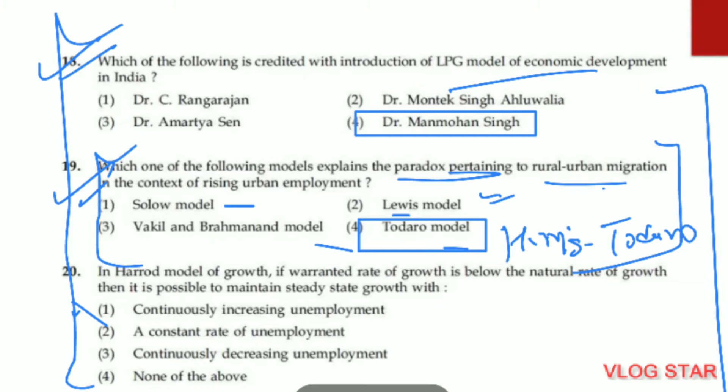Question number 19. The Harris-Todaro model — option four — explains the paradox pertaining to rural-urban migration in the context of rising urban unemployment. This model says people migrate from rural to urban areas to earn more money. The Lewis model talks about transfer of labor from the agriculture sector to other sectors, utilizing surplus agricultural labor in industry or services for more productivity. The Vakil and Brahmananda wage-good model talks about planning and investing more in capital goods.